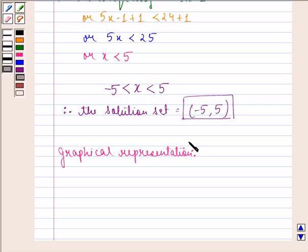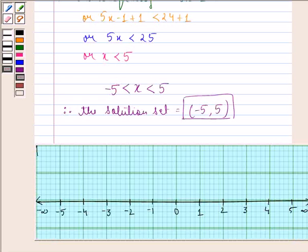This is the number line and the interval we want is -5 to 5. This blue line represents the solution set.